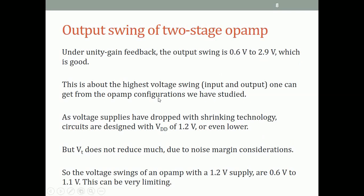Therefore the voltage swing of the two-stage op-amp under unity-gain feedback is 0.6 V to 2.9 V. This is the highest swing one can get from any op-amp. The folded cascode had a swing of only 0.62 V to 2.8 V because there were two transistors above VO. So the two-stage op-amp gives the highest possible voltage swing of any (GM·RO)²-type configuration.